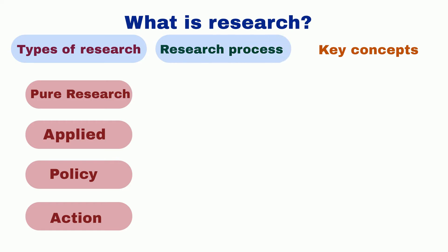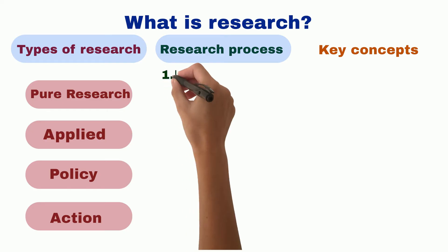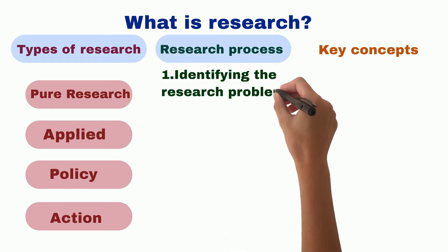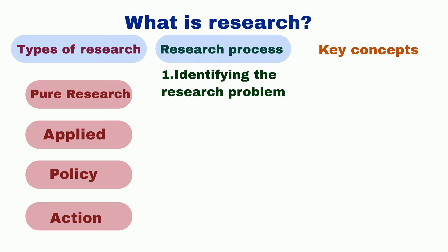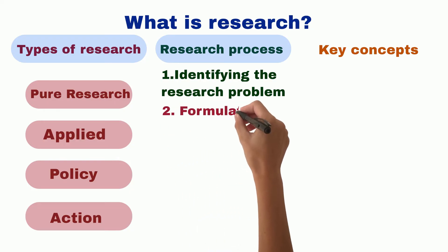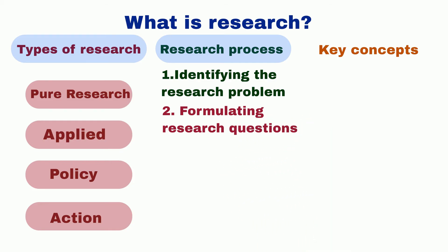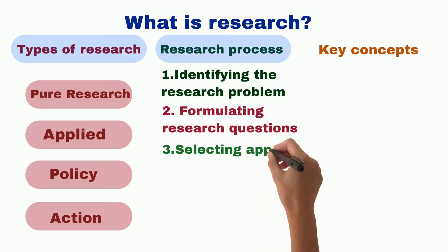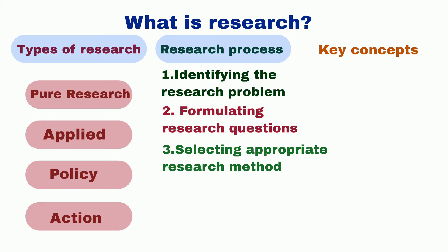The research process typically involves several stages, including: 1. Identifying the research problem, which involves defining the issue or topic that requires further investigation. 2. Formulating research questions or objectives, which involves defining the specific questions or objectives that the research aims to answer. 3. Selecting an appropriate research method or methodology, which involves choosing the best approach to answer the research questions or objectives.